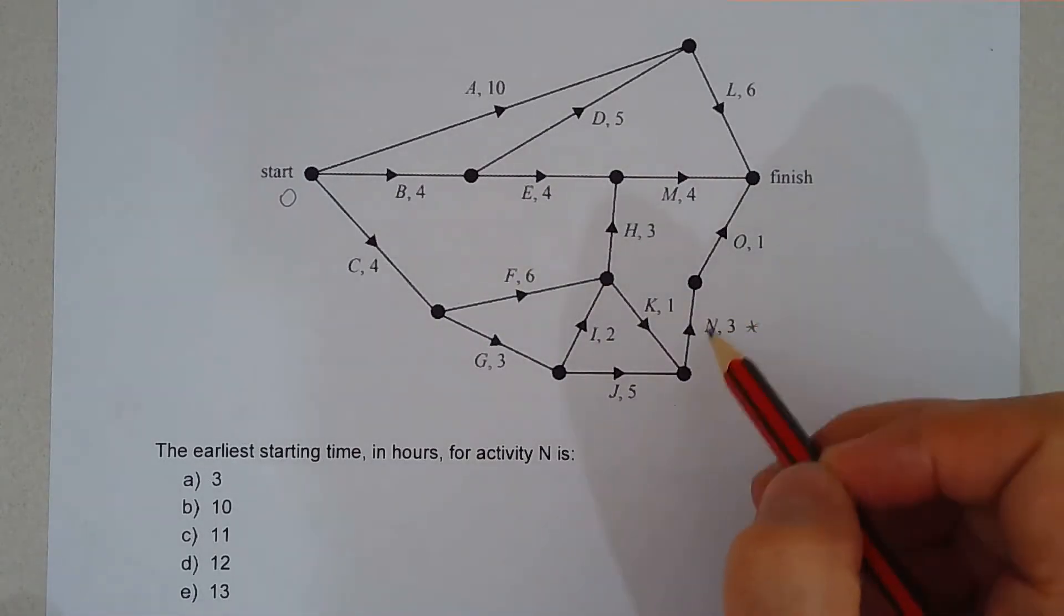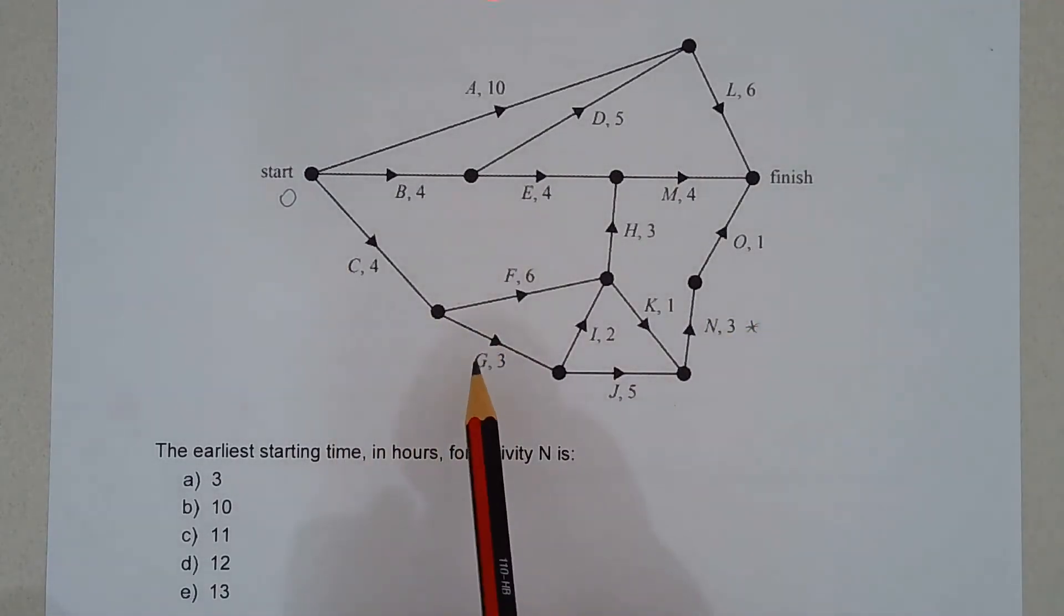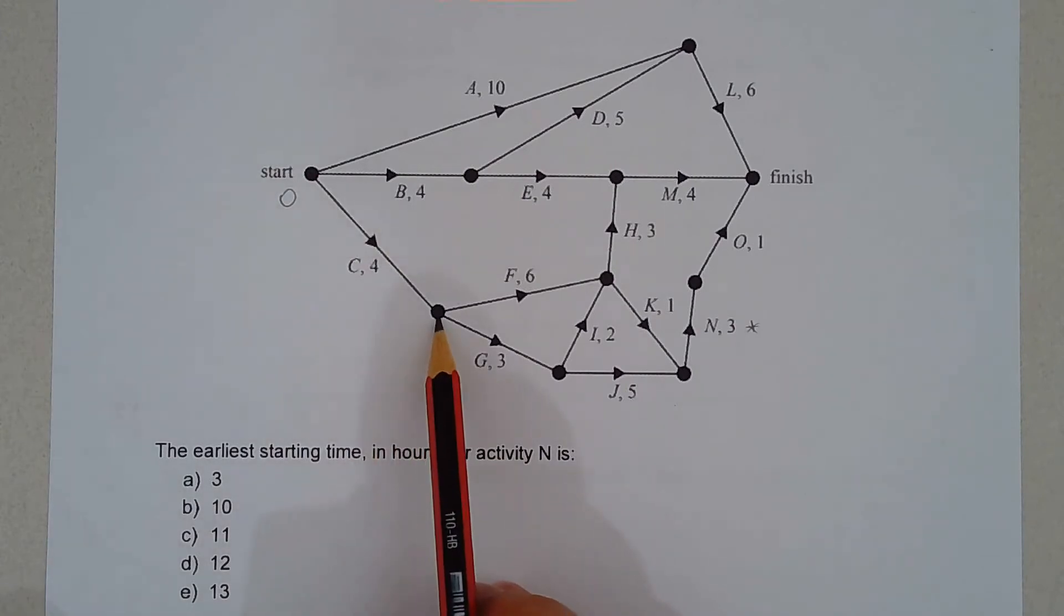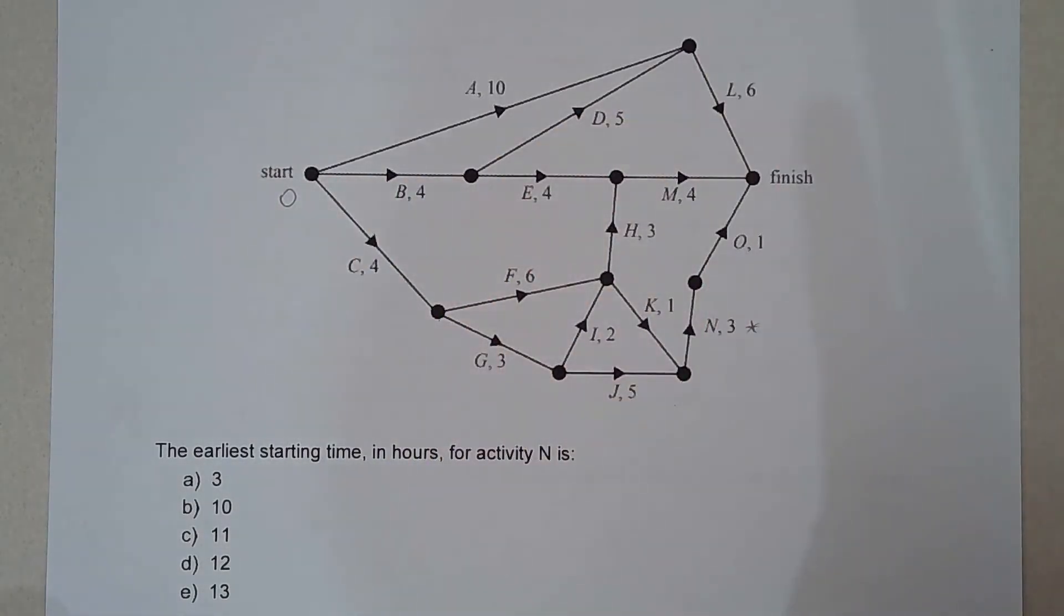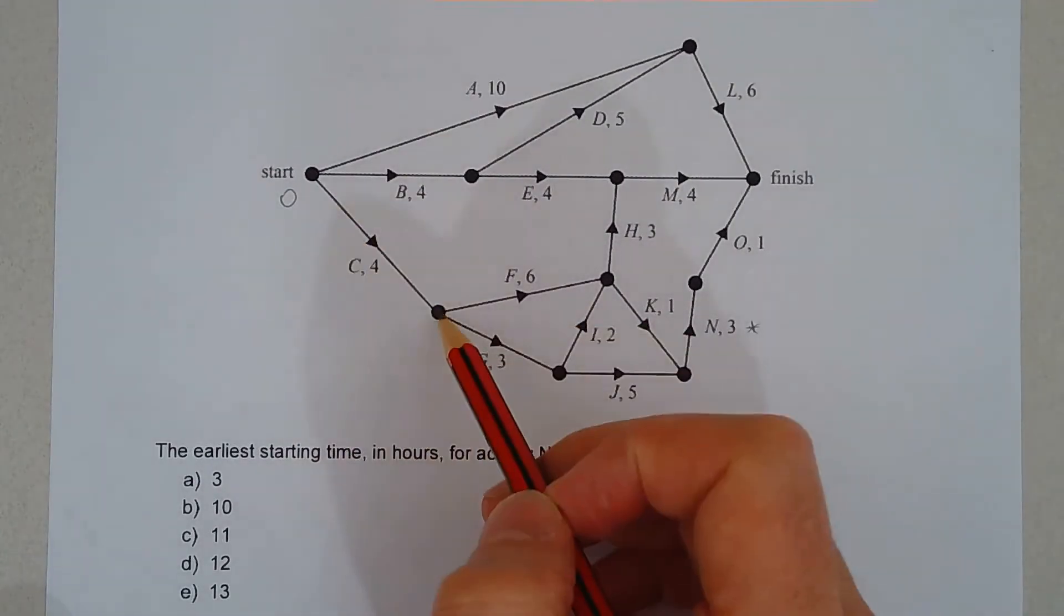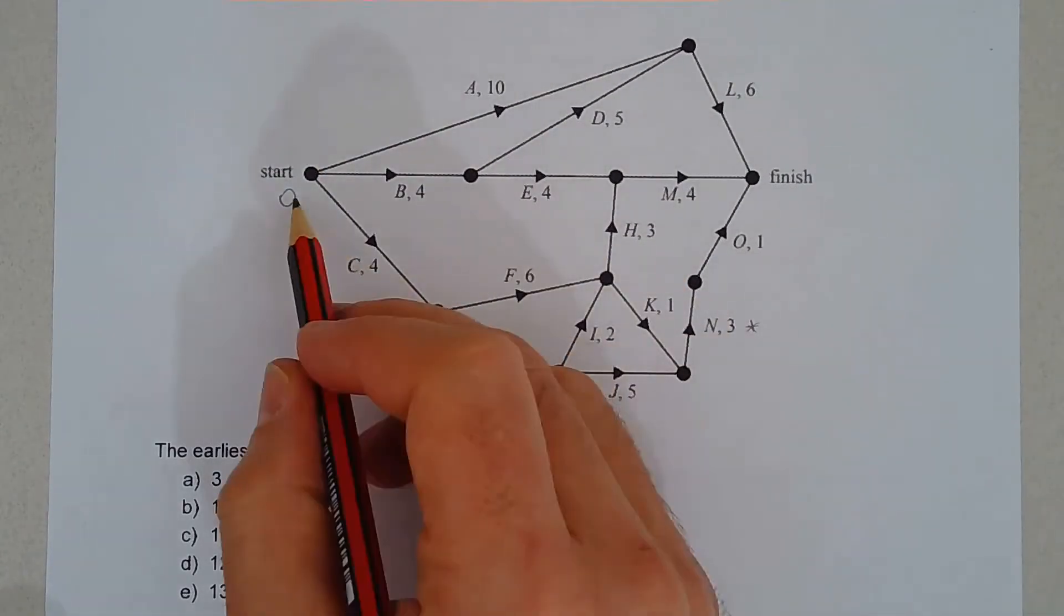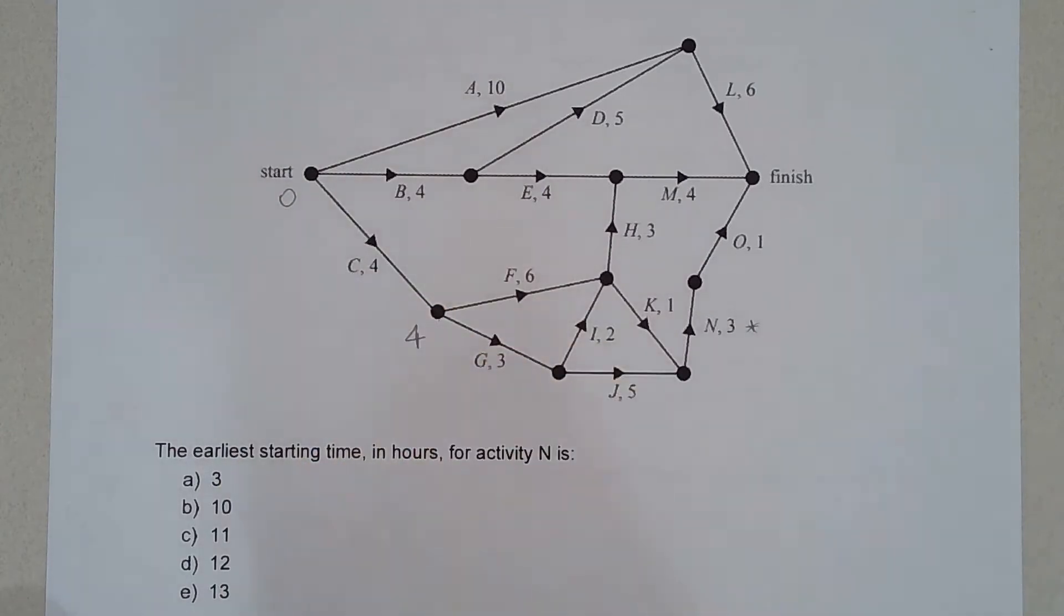Now to get to activity N, we can go through activity C, in fact that's the only way to go. Going through activity B or A is pointless so there's no point wasting time on that. Let's start with activity C, so zero plus four takes us to the four hour mark.